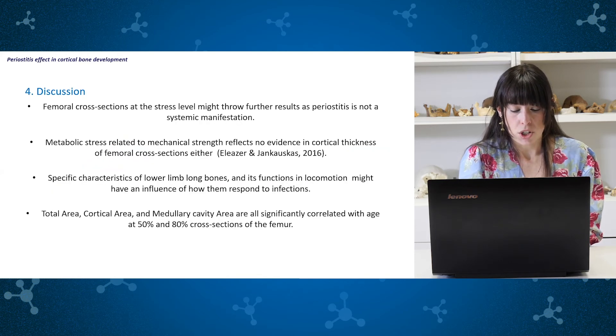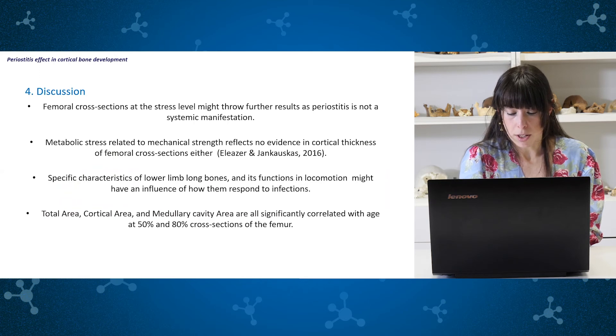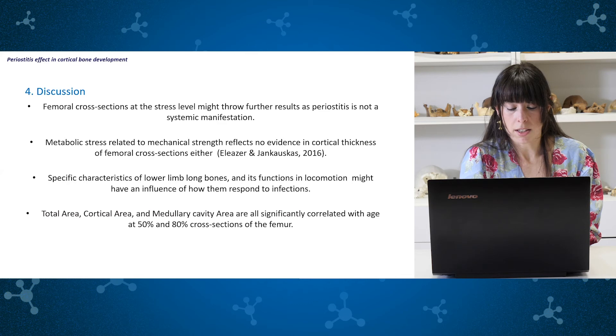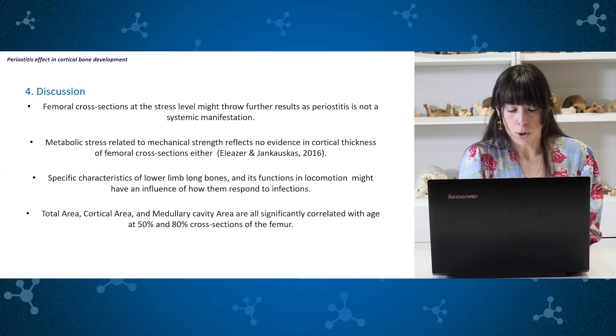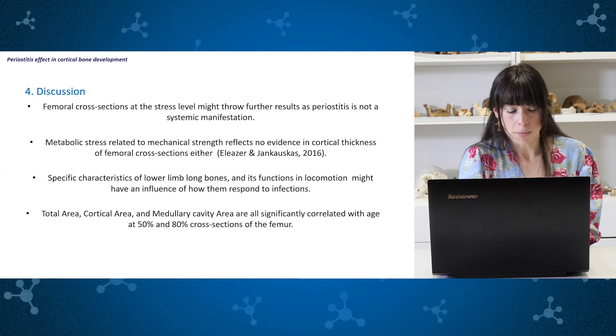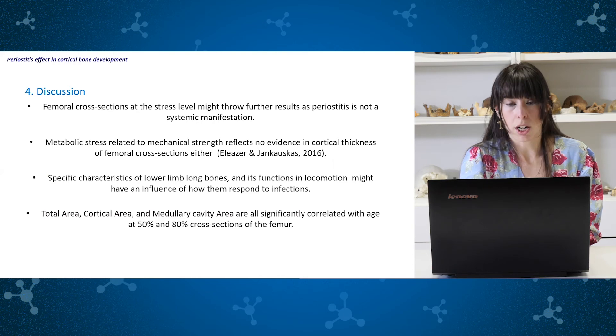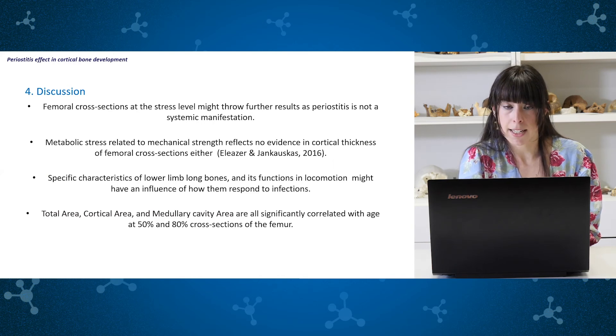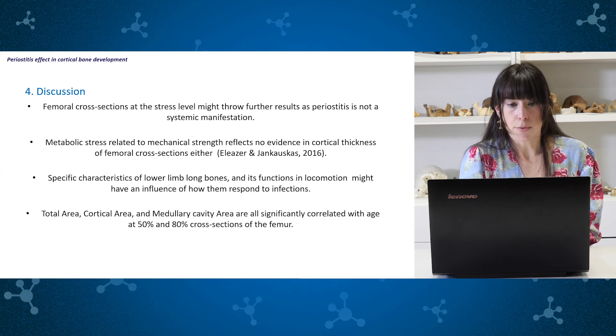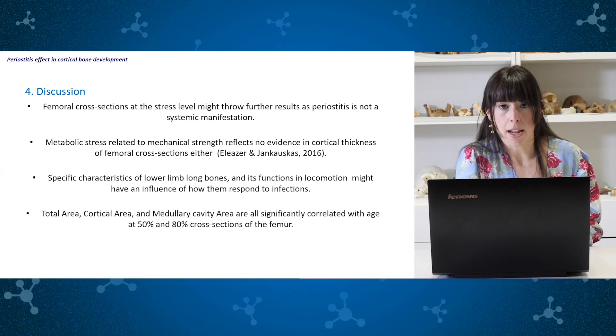Femoral cross sections at the stress level on the bone affected by periostitis may throw further results at this stress indicator is not a systemic manifestation. The whole bone affected might not be involved but only the specific spot where periostitis is present. We could also make the relation with healthy individuals taking slices at the same cross-sectional point as in ill individuals. An increase of the sample will also offer more reliable results.